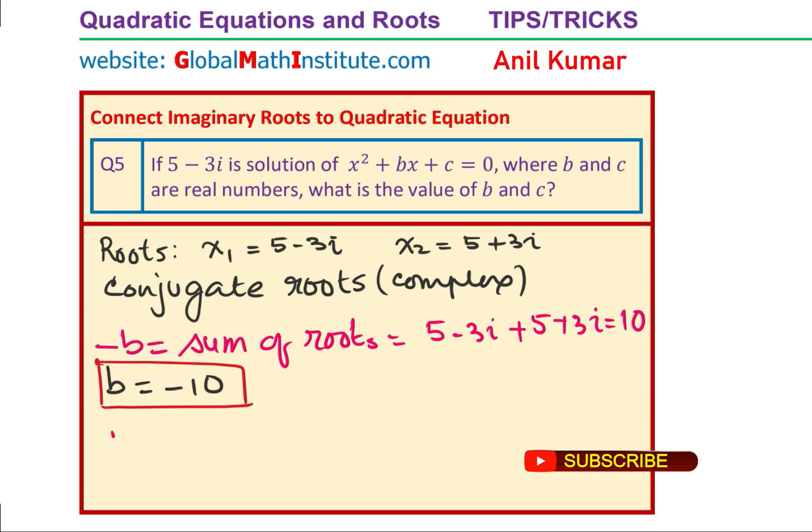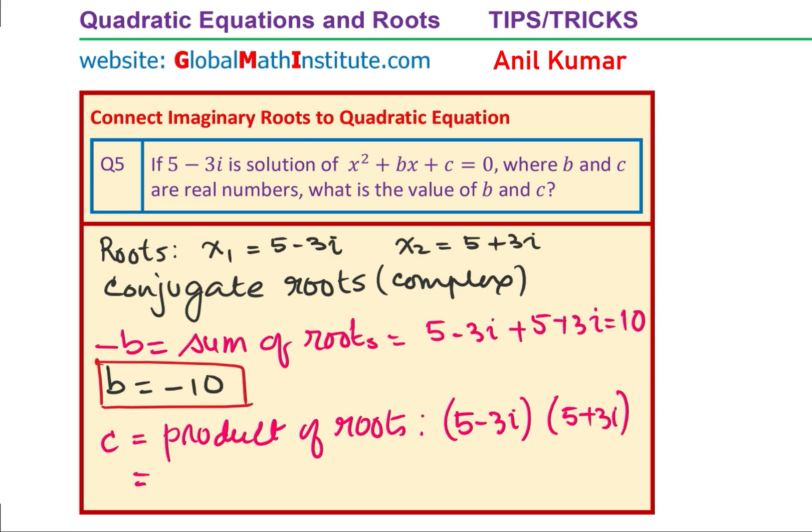And now, we know that c is basically equals to product. So we will do the product of 5 minus 3i times 5 plus 3i. What do you get? A square minus b square. So we get 5 square minus 3i square. I square is negative, so we get 25 minus 9 times minus 1, which is 25 plus 9 or 34. So we get the value of c as 34. So we have our answer, which is b is equal to minus 10 and c is equal to 34.